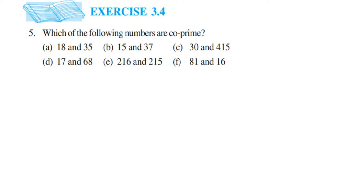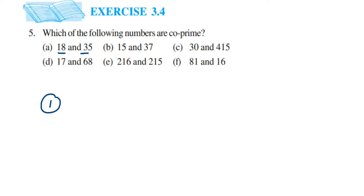Hey everyone, here is your question on exercise 3.4, the chapter is playing with numbers. The question is: which of the following numbers are co-prime? Co-prime numbers means when the common factor between the two given numbers is one. So we have to find out the factors of each given number, and if the common factor is only one, no other number, then we call them co-prime.